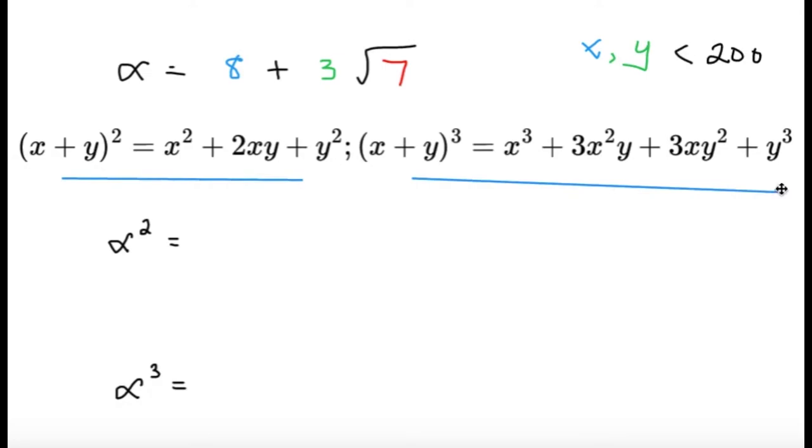which is 64 plus 2xy. So, 2 times 8 times 3 square root of 7, that's 48 square root of 7. And then, y squared, so 3 square root of 7 squared, that's 63. So, working out the math, this is equal to 127 plus 48 square root of 7.